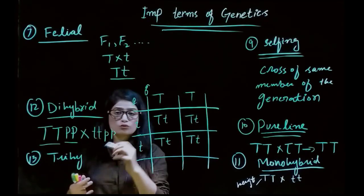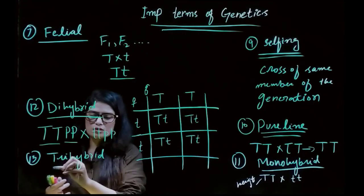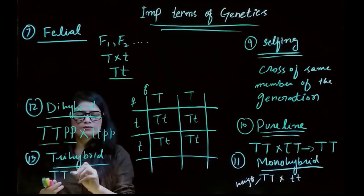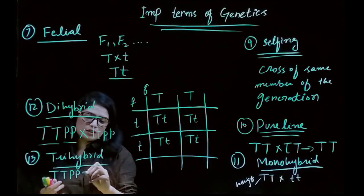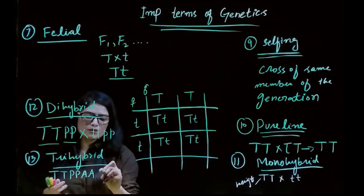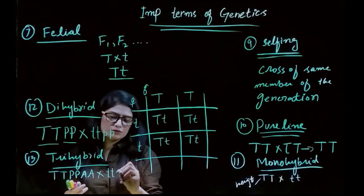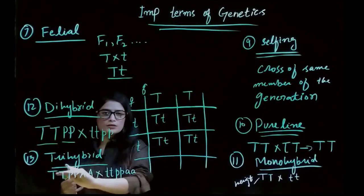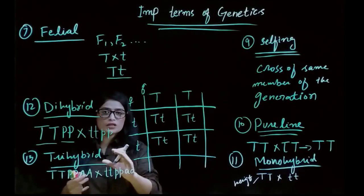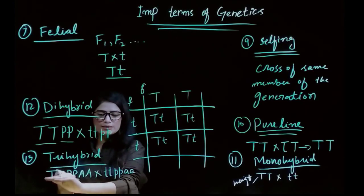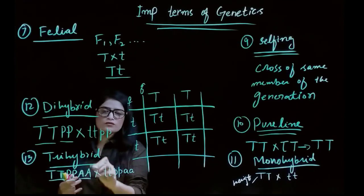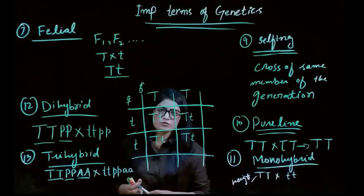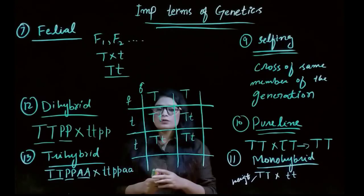In the same way, we have a trihybrid cross, where we check three characters at the same time. For example, a tall plant with purple color and axial position crossed with a short plant with white color and terminal position. We are simultaneously checking three characters: height, color, and position. This is the trihybrid cross. These are all the important terms of genetics we will use in different principles of genetics.